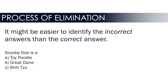Here's a really silly example. Scooby-Doo is a what? Some of you may have zero clue, but you know what the Scooby-Doo cartoon looks like. He is certainly not a toy poodle, and he is certainly not a Shih Tzu. So, process of elimination — Scooby-Doo must be a Great Dane. Take this approach into the FAA test on questions where you're not 100% certain of the correct answer.